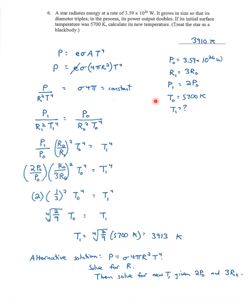It says diameter triples, but that also means the radius is tripling. So we can say R1 = 3R0. It says the power doubles, so P1 = 2P0. Initial temperature is 5,700 Kelvin. What is the final temperature? With these quantities in mind, let's go back to where I'm solving the problem. In place of P1, I'm going to substitute 2P0, and in place of R1, I'm going to substitute 3R0.